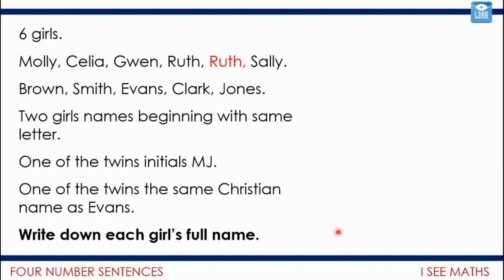Well, something that I know I can start with is this: I could start with two girls have names beginning with the same letter. Because if I look at the combinations of names, I know that there's only two possible combinations: Sally Smith and Celia Clark. There's no other names that it could be where they have matching same letter for the first name and the surname. So already I can eliminate. I know that the names are Sally Smith and Celia Clark.